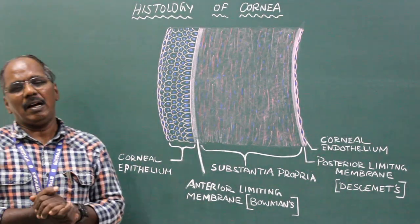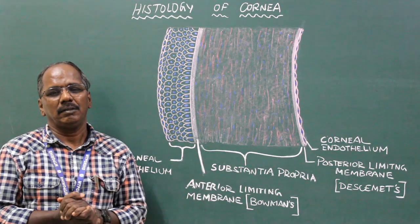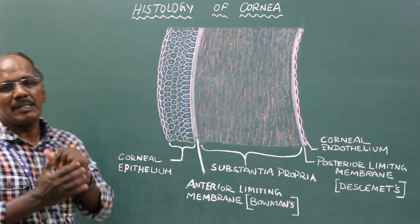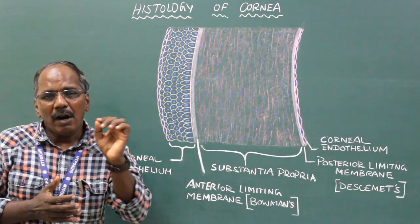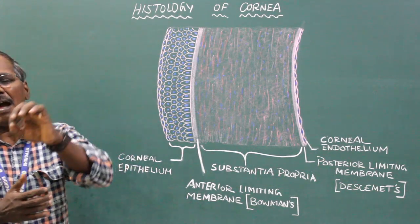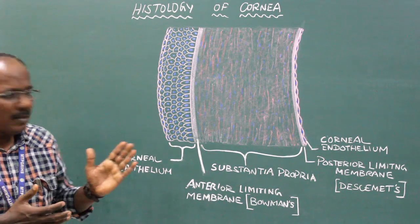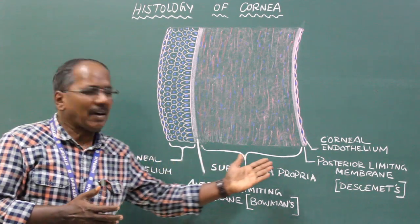Histology of Cornea. The cornea is a thin, transparent, non-vascular structure of the eye. It is made up of five layers.